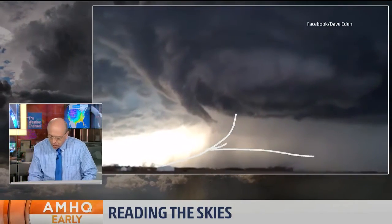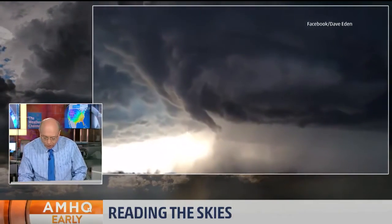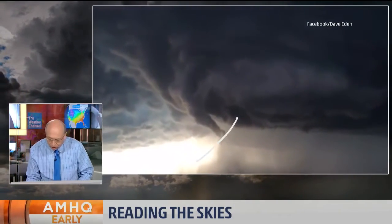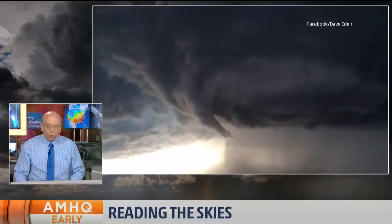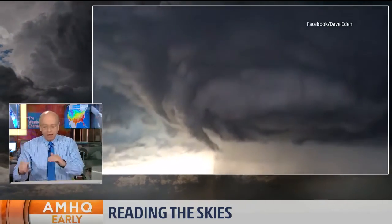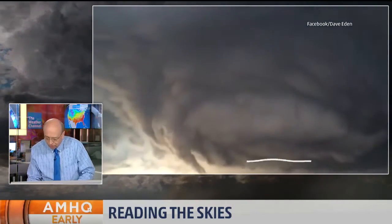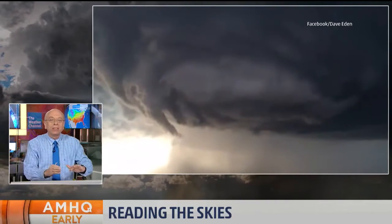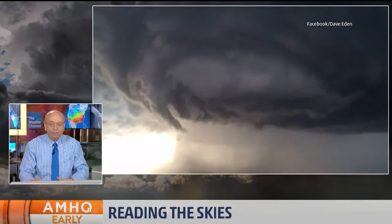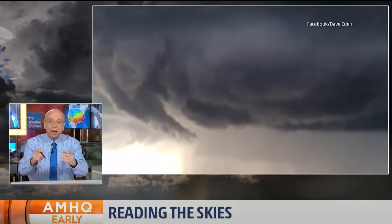You also see here what we call a rain foot — rain shafts that are angled from upper right toward lower left. If you see that rain foot, it means winds are blowing from right to left. And if you see that wall cloud hanging down, there could be a tornado coming from that.